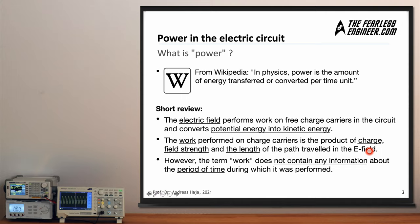The potential energy when the apple drops is converted into kinetic energy, and this conversion process is what we call work. The same holds true for electrons in the electric field. Importantly, the term 'work' does not contain any information about the period of time during which it was performed — and that's exactly what power adds. Power brings into the game the time over which a certain work is performed.